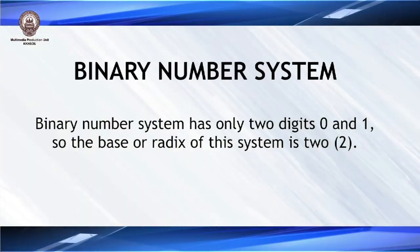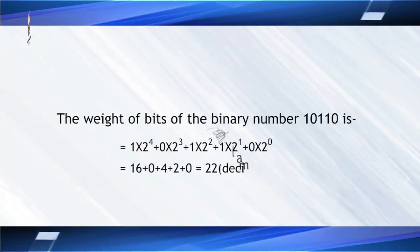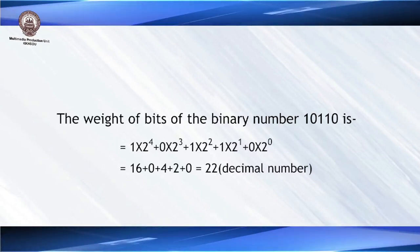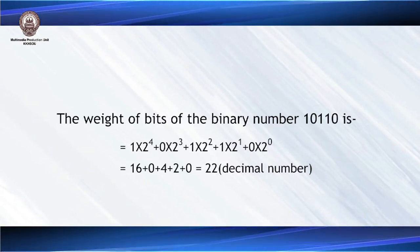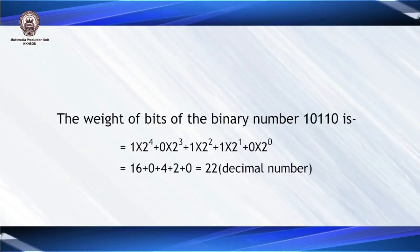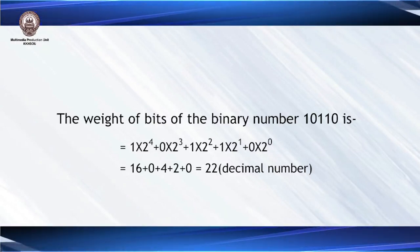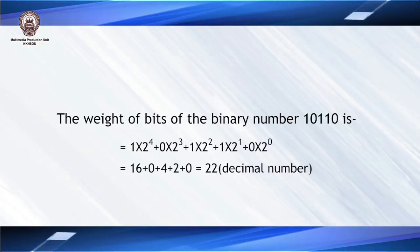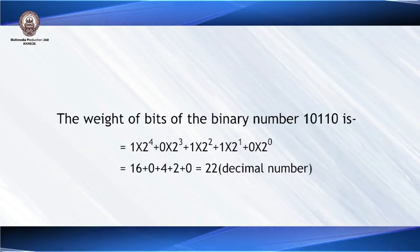Now let's move on to the binary number system. In binary, there are only two digits: 0 and 1. Since there are only two digits, we represent this as 'bi', and from there comes the name binary. For example, if we take the binary number 10110, the weight can be calculated using the same formula: 0×2⁰ + 1×2¹ + 1×2² + 0×2³ + 1×2⁴, which gives the decimal equivalent 22.